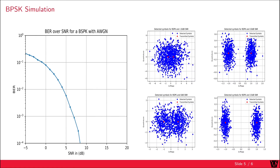This behavior for different types of noise levels can be simulated in Python. A common way of illustrating this is a bit error rate over signal-to-noise ratio curve. On the right you can see 1000 randomly generated transmit symbols including their noise for different signal-to-noise ratio values. As the signal-to-noise ratio gets higher, fewer transmit symbols will be wrongly detected and the bit error rate will be smaller.